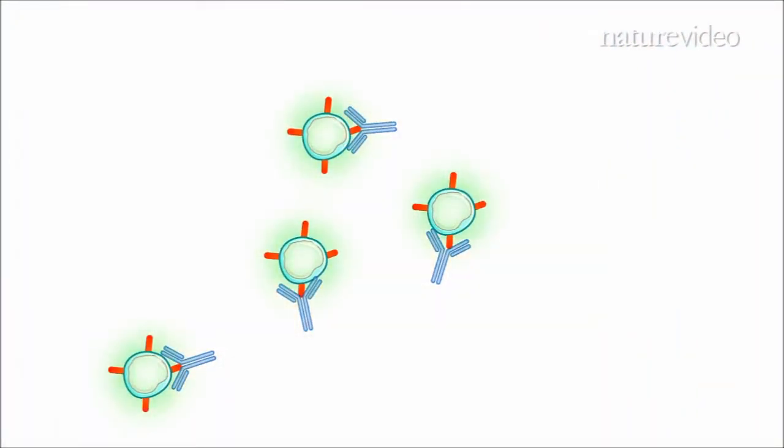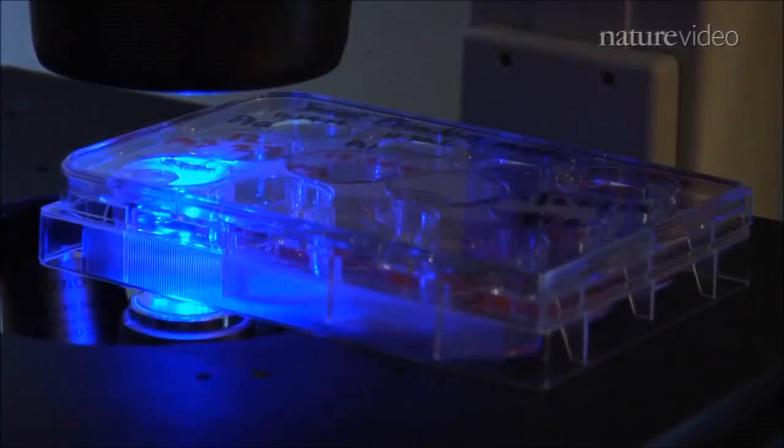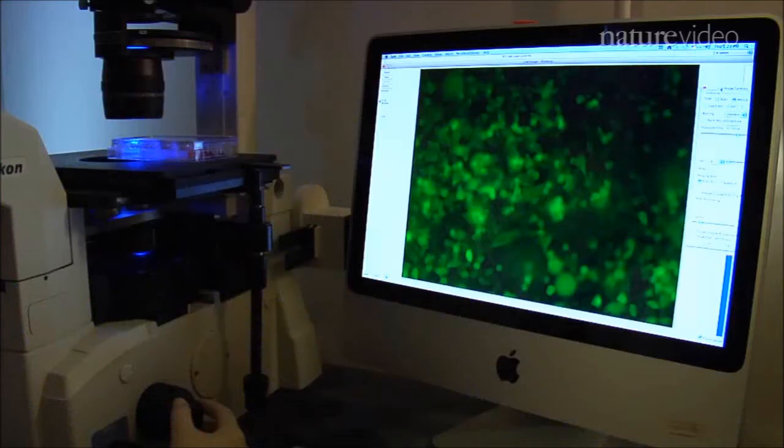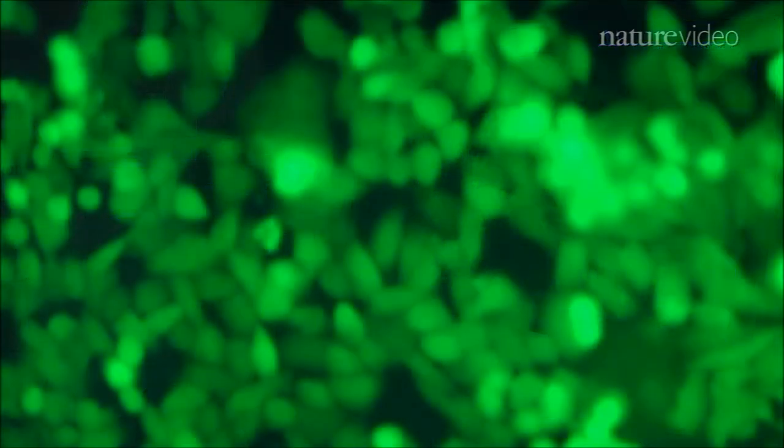A labeling protein tags the cells to make them glow green. The green makes the stem cells traceable. Tilley's lab injected some of them into human ovary tissue and transplanted this into a live mouse. There, the green cells matured into new human eggs.